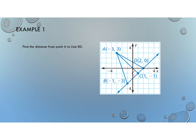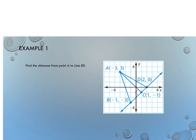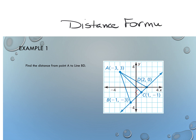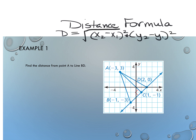Let's review the distance formula we learned back in chapter one. Given two ordered pairs, it's the square root of (x₂ minus x₁) squared plus (y₂ minus y₁) squared. You take the difference in the x's, add that to the difference in the y's, and then square root the whole total.